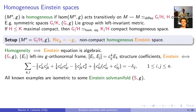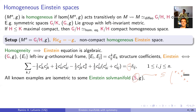Many examples are known in the case of negative Einstein constant, and they all happen to be isometric to Einstein solvmanifolds — left-invariant Einstein metrics on solvable Lie groups. By solvable, one can think of Lie groups that are subgroups of the group of upper triangular invertible matrices — they are very different from, essentially the opposite of, semi-simple groups.